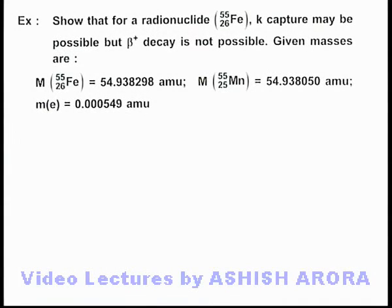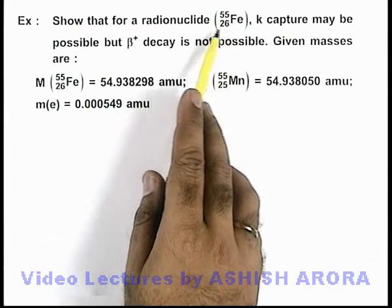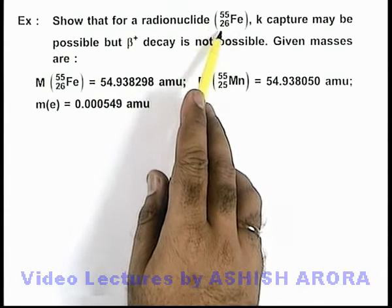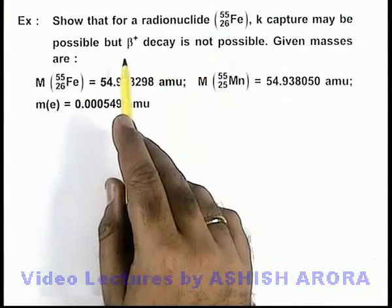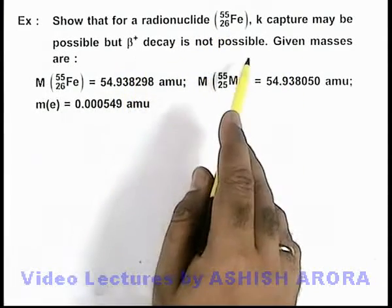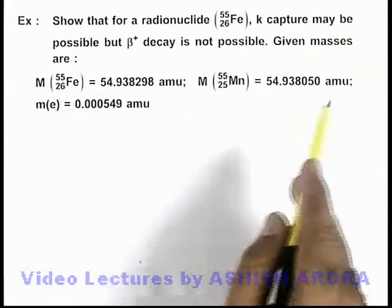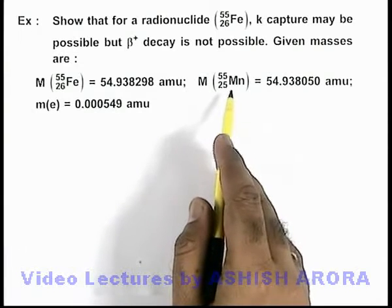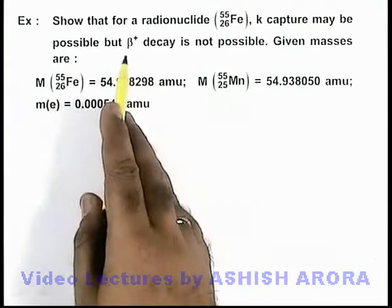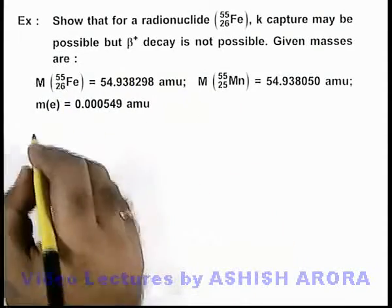In this example, we are required to show that for radionuclide iron-55 (mass number 55, charge number 26), K-capture may be possible but beta-plus decay is not possible. We are given the masses of iron, manganese, and electron. Manganese mass is given because if K-capture or beta-plus decay occurs, iron will decay to manganese.